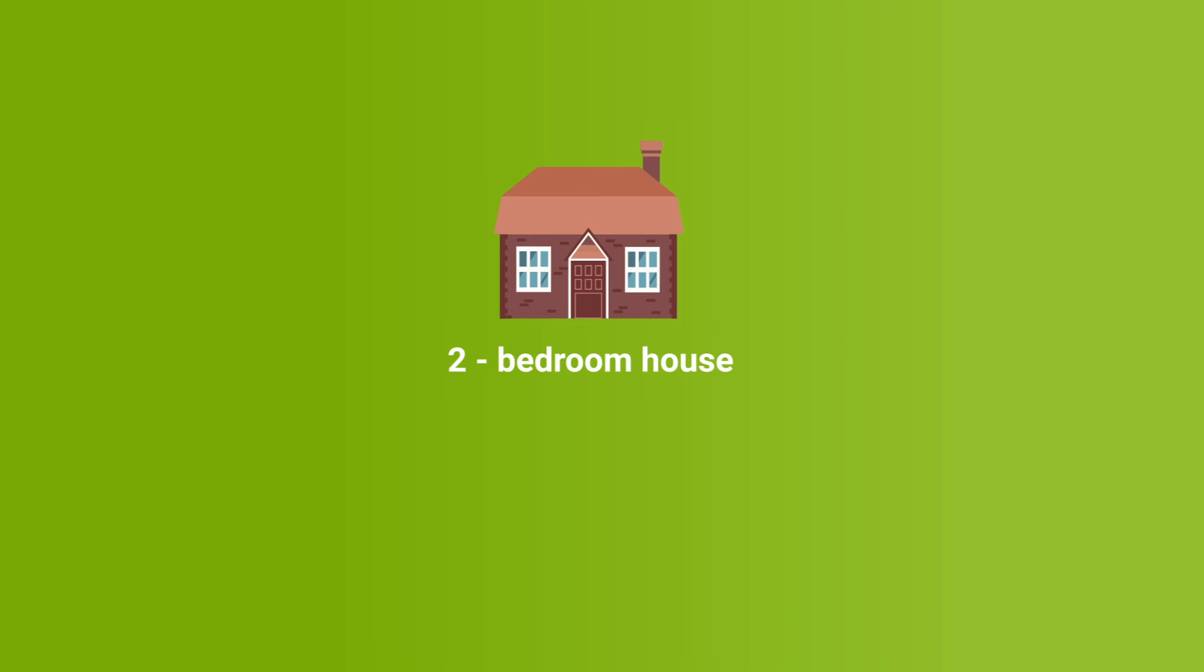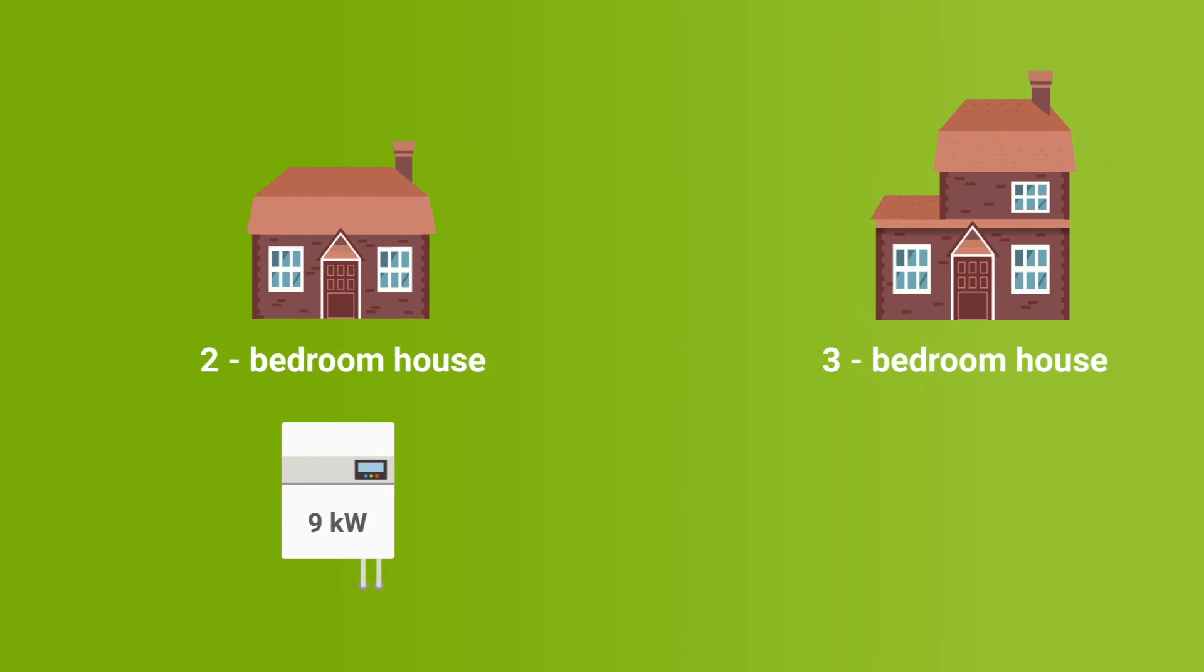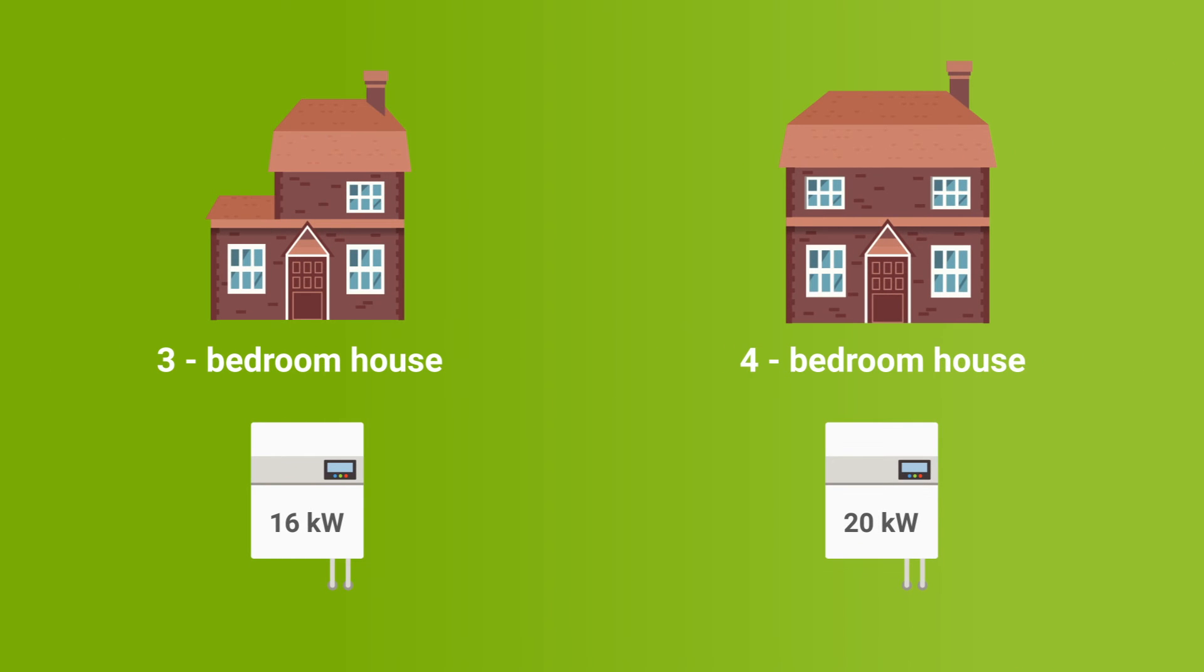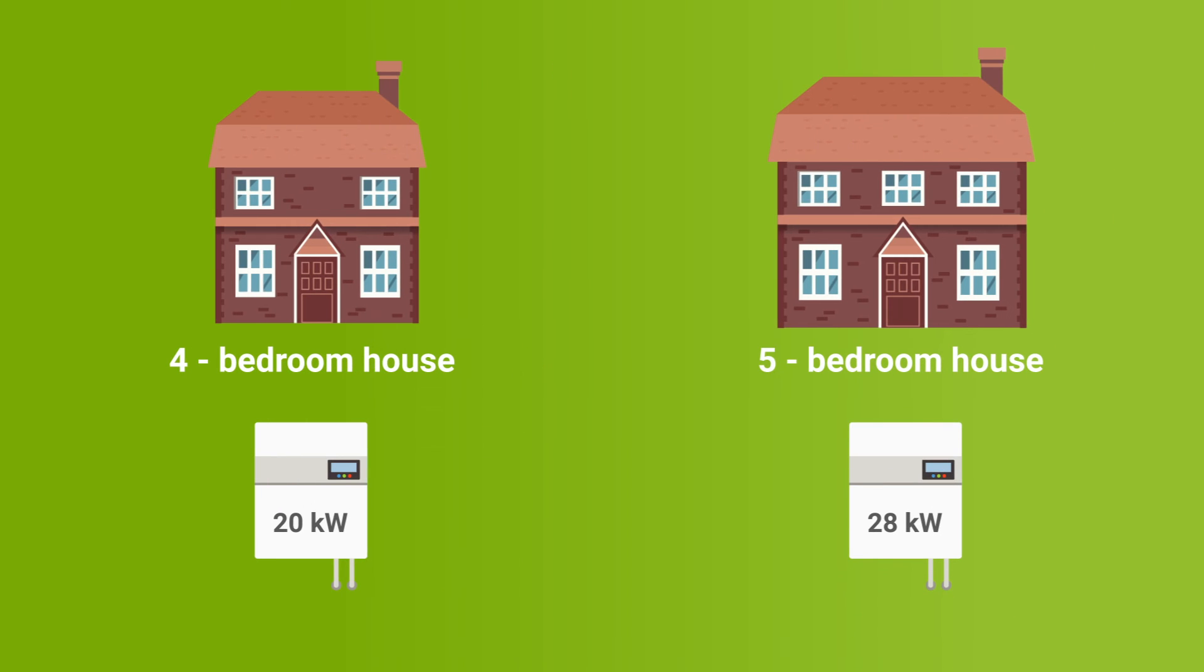A two-bedroom property will generally need a boiler with an output size of 9 kilowatts or higher. This goes up to 16 kilowatts or more for a three-bedroom property and 20 kilowatts or more for a building with four bedrooms, while a large five-bedroom home will require a boiler with an output of around 28 kilowatts plus.